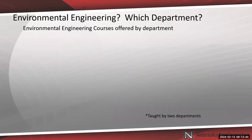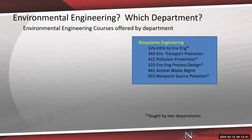Environmental engineering courses from an example university department — just to give you an idea of what the classes look like. There's a class called Animal Waste Management. If you've never been by a feedlot situation where they have a thousand cows on one acre, there's some animal waste going on there that needs to be managed — you can't just push it over into the river anymore.